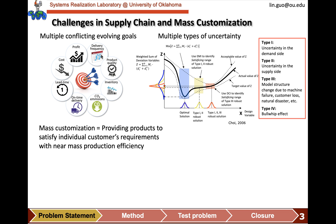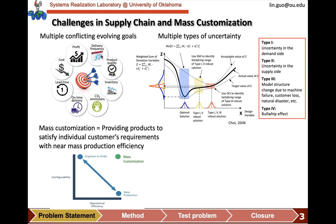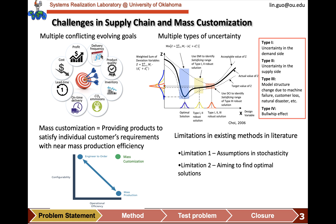We also encounter challenges in mass customization. Usually, the configurability of a product has a negative correlation with its operational efficiency, but in mass customization we want to optimize both of them. After a literature review, we identify two limitations in the existing methods. First, the uncertainties are full of assumptions, which can be wrong. And second, they are all seeking optimal solutions, which are relatively sensitive to uncertainties.